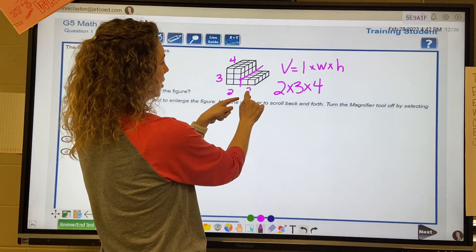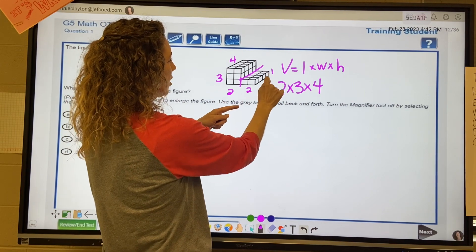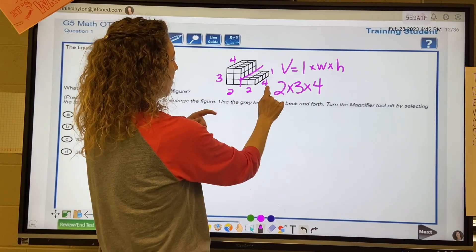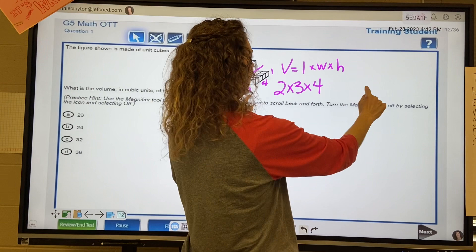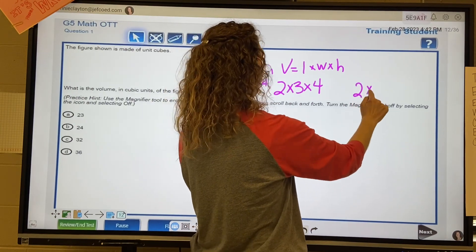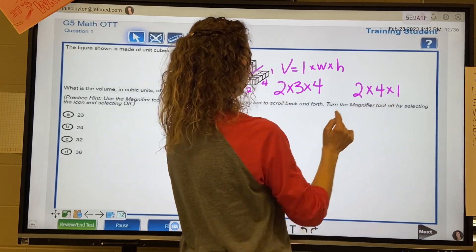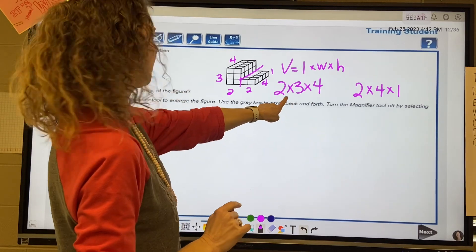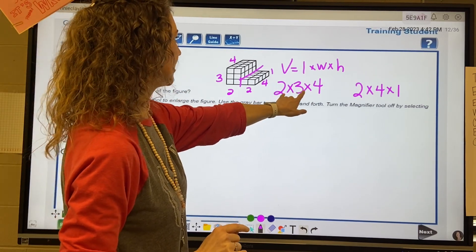It's two, it's only one tall, and one, two, three, four going back. So the other one is a 2 by 4 by 1. Okay, so that's going to be six. 6 times 4 is 24.